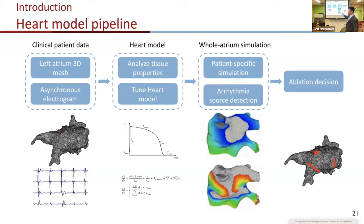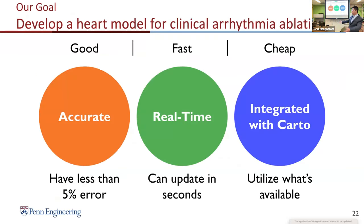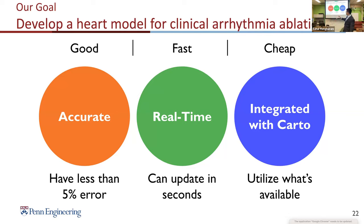The heart model — a set of differential equations — has parameters that represent local tissue properties. Patient data from different locations is processed and converted into local parameters so that when we run the simulation on the entire atrium, it is patient-specific everywhere. The local electrograms are transformed and converted into heart model parameters to give a patient-specific heart model, and we use a tuning optimization process to minimize the difference between patient data and simulation output.